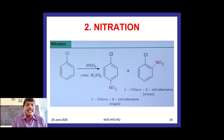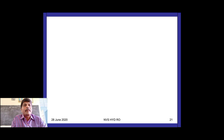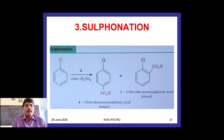Second electrophilic substitution reaction: nitration. When chlorobenzene is treated with a nitrating mixture, it gives ortho and para products; 1-chloro-4-nitrobenzene (para) is the major product and 1-chloro-2-nitrobenzene (ortho) is the minor product. Third: sulfonation. When chlorobenzene is treated with fuming sulfuric acid (oleum), you get 4-chlorobenzene sulfonic acid (para product) as the major product — addition of an –SO3H group.